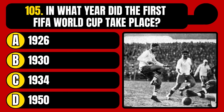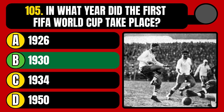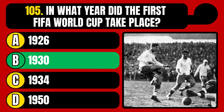In what year did the first FIFA World Cup take place? 1926, 1930, 1934, or 1950? The correct answer is option B, 1930.